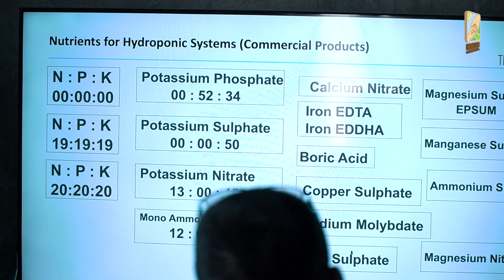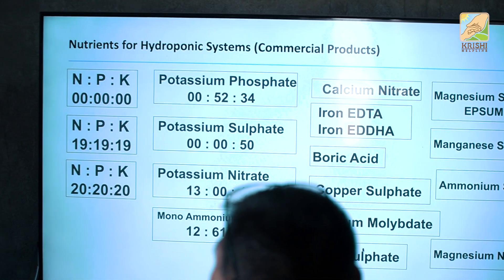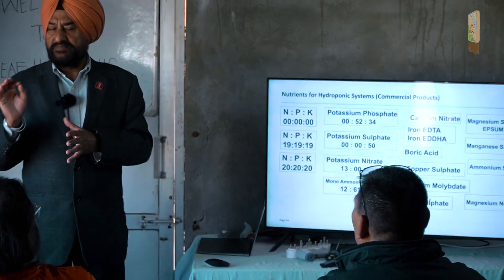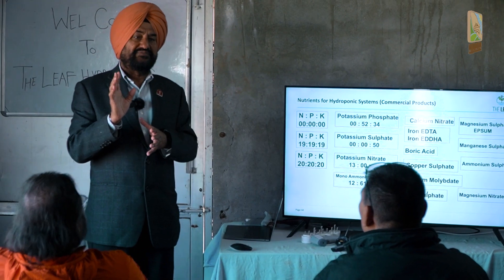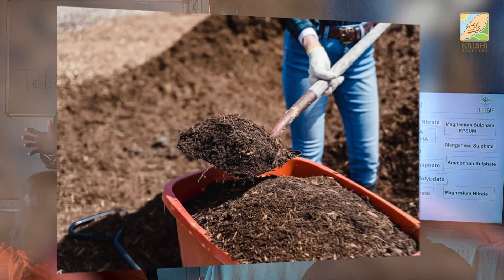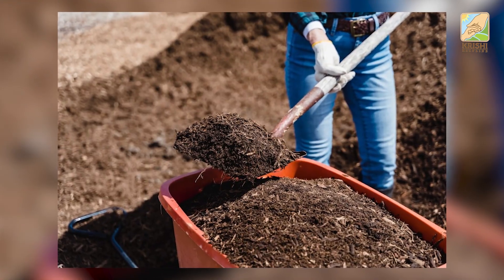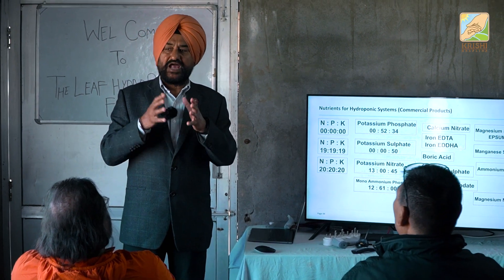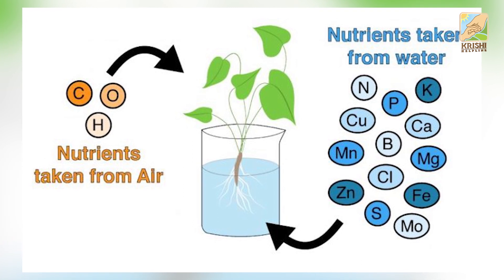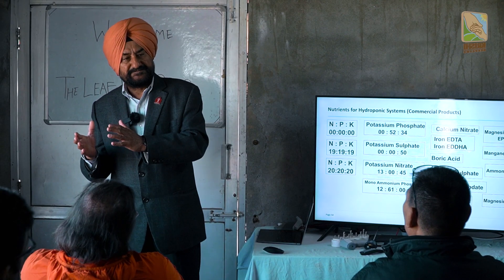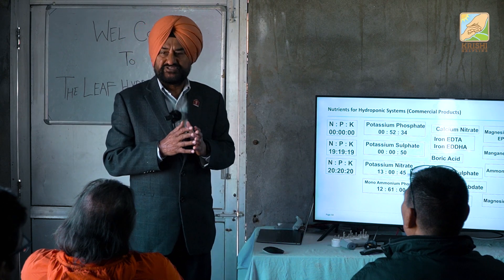No plant can take any compound as such — all nutrients are taken by the plants in ionic form. Even if you give farm yard manure, as I was discussing yesterday, it cannot be taken by the plant as such. It will have to be broken down into calcium, nitrate, potassium, phosphate — ionic form. Positive charge and negative charge. Ammonia is a positive charge and nitrate is a negative charge.